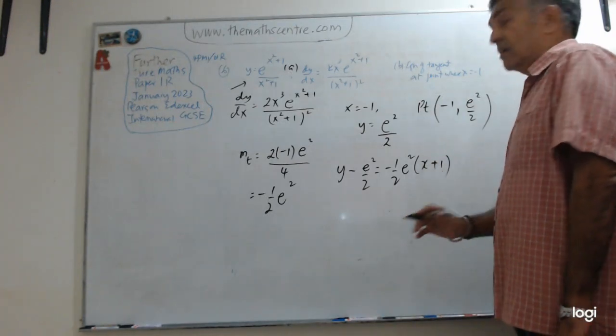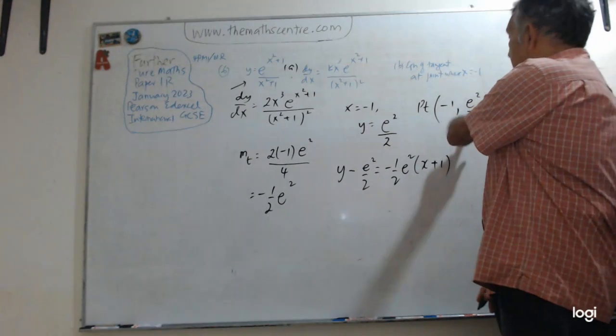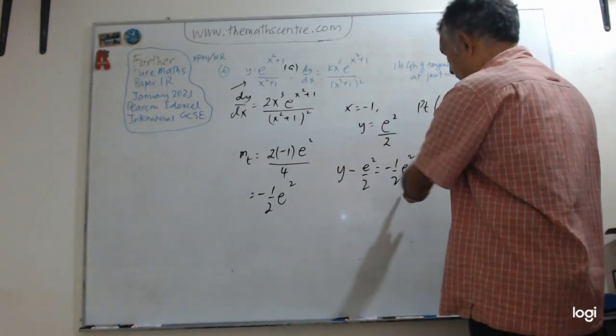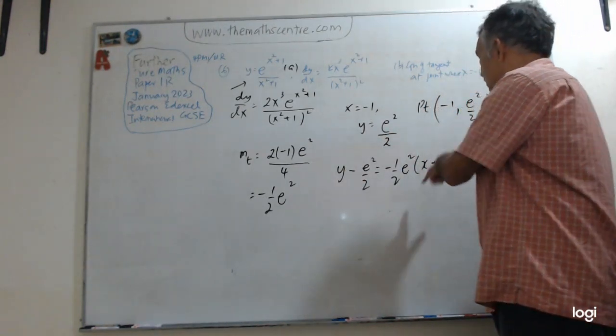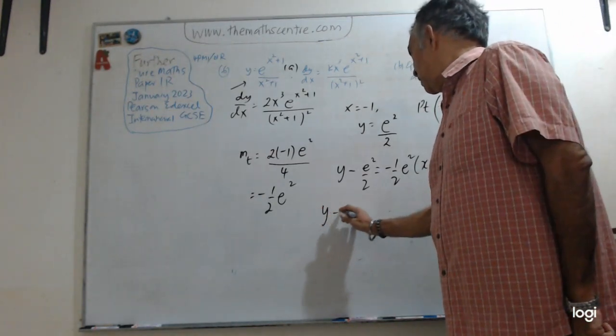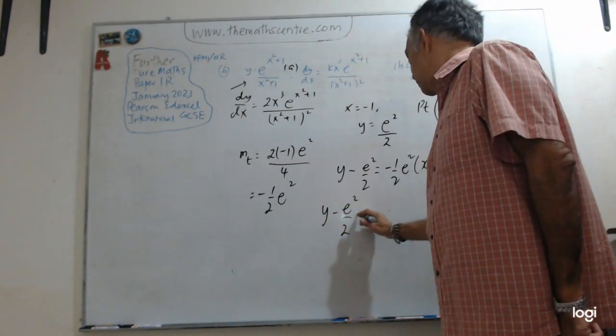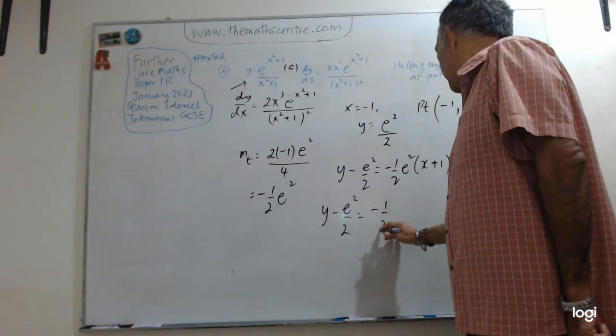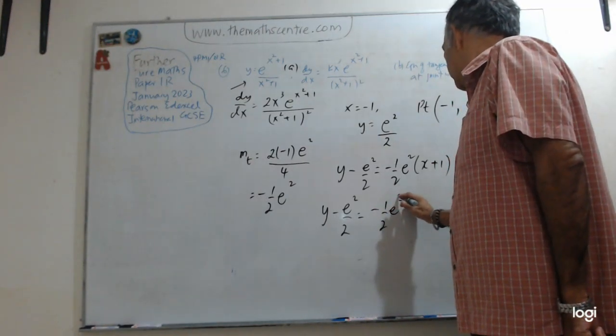In this case, it will be, so y minus this. Plug in the gradient and x minus x₁. So minus minus is plus. So I have y minus. Let's clean this up so we don't make any mistake. Minus 1 half e squared.